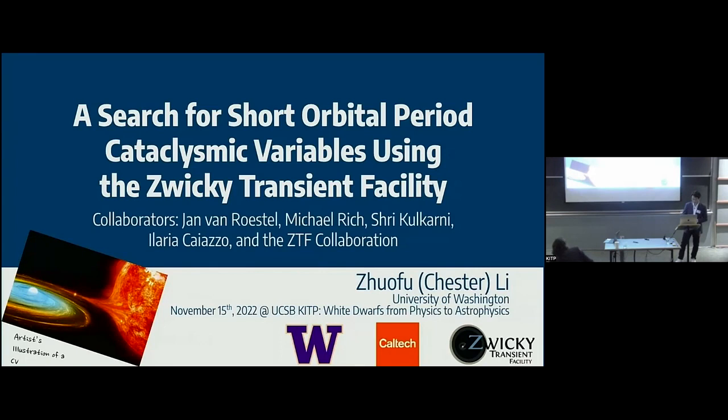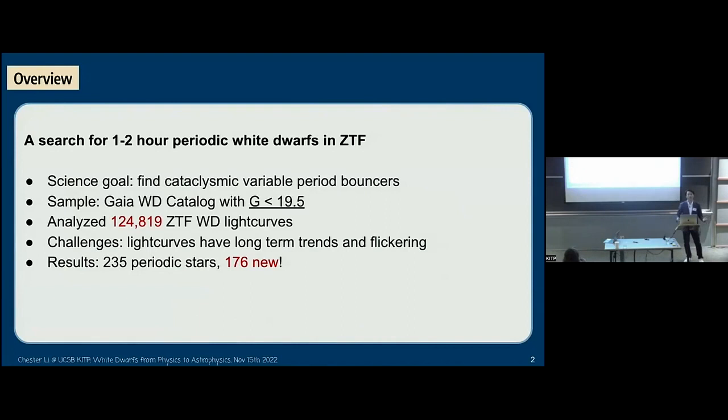For this project, we focus on searching for one to two-hour periodic white dwarfs in ZTF. Our goal is to find those missing CV period bouncers. We determined our sample using the Gaia white dwarf catalog with g-magnitude less than 19.5. In total, we analyzed more than 124,000 white dwarf light curves.